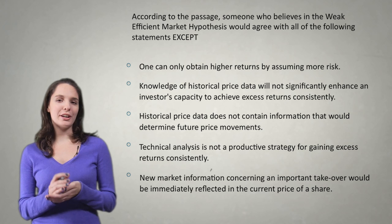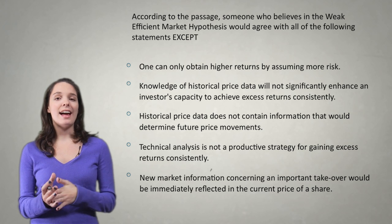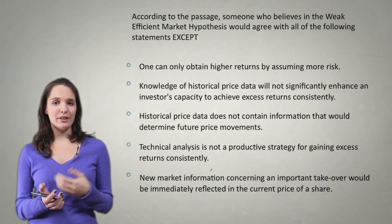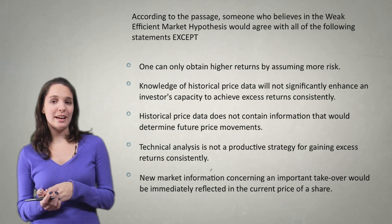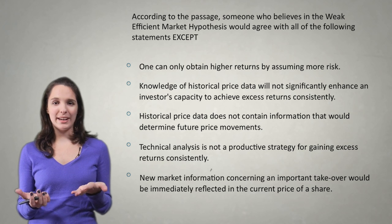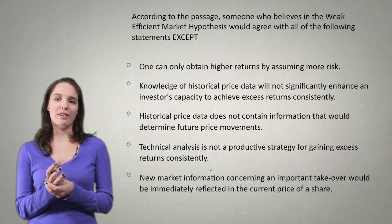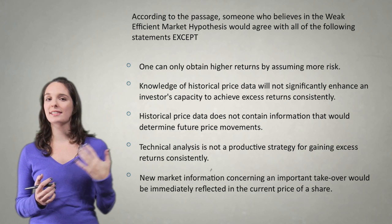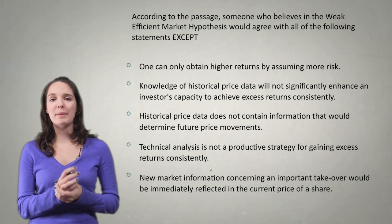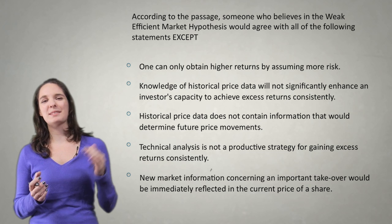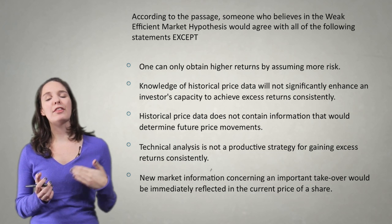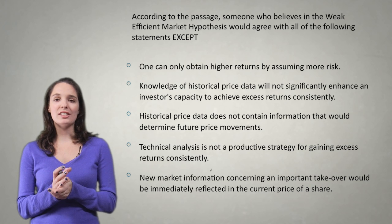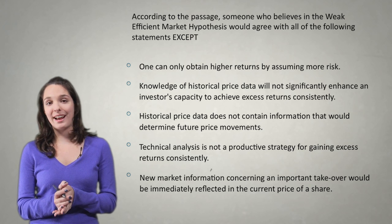In our passage, the first paragraph is really an introduction and it sets up three different theories: we have the weak EMH (efficient market hypothesis), the semi-strong EMH, and the strong EMH — so three versions of a hypothesis. Then the next three paragraphs each cover one version: the second paragraph talks about the weak EMH, the third about the semi-strong EMH, and the fourth and final paragraph talks about strong EMH. That's the overall structure I have in my mind going into the question.